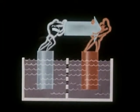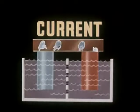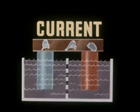Voltage represents the difference between the number of extra electrons at the two terminals. And when a suitable path is provided, the potential difference causes the electrons, or current, to flow from one terminal through the conductor to the other terminal.